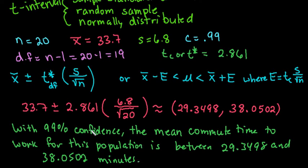This is what we would report back, that based on our sample it appears the mean commute time is somewhere between 29.3 minutes and 38.05 minutes. Remember that what a confidence interval does is 99%, if this was done an infinite number of times from this population, 99% of the intervals will contain the true mean. As always, thanks for watching.